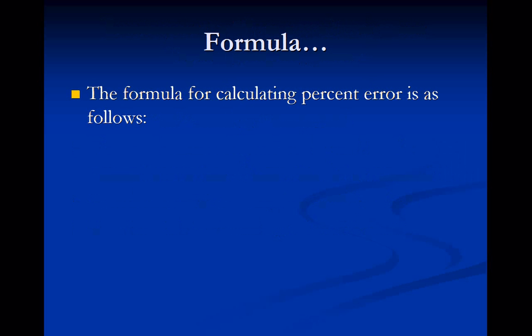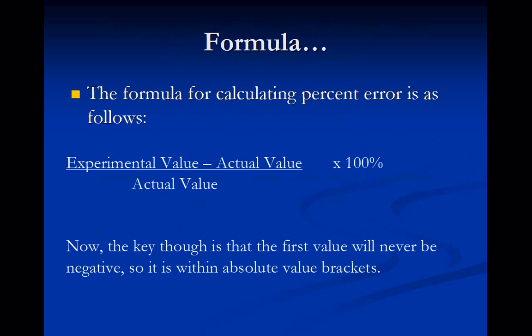The formula for calculating percent error is as follows: the experimental value, which is what you get in the lab, minus the actual value, which is the accepted value — what you should actually get — over the actual value, times 100%, gives you the percent error. The key to this is knowing that the numerator — experimental value minus actual value — will never be negative. It is within absolute value brackets, which I couldn't draw in this PowerPoint, but you just have to know that you're never going to get a negative value.